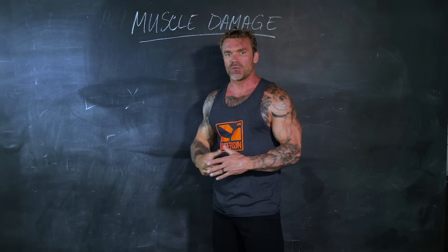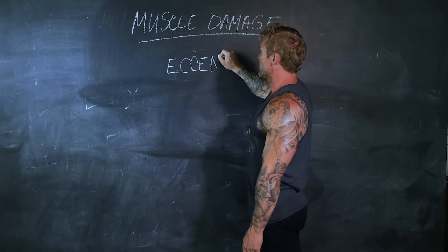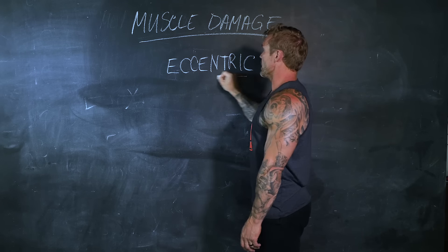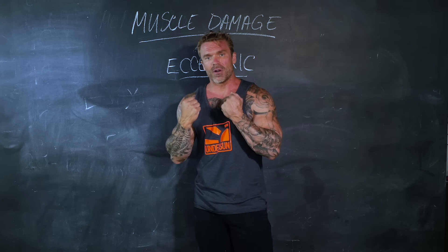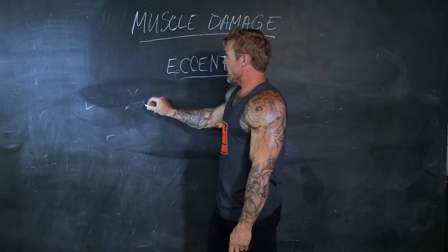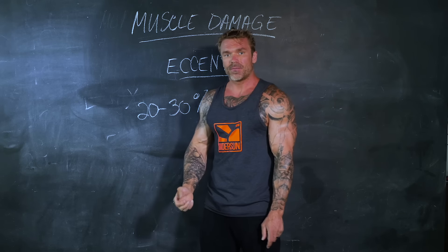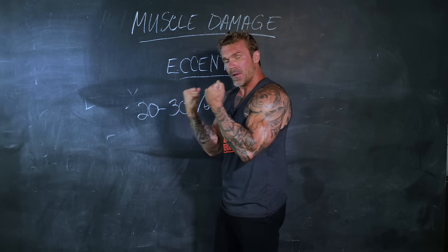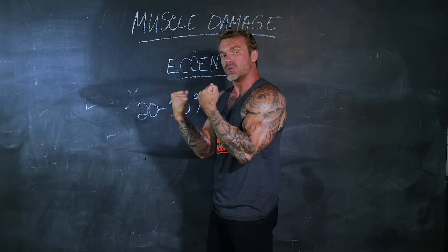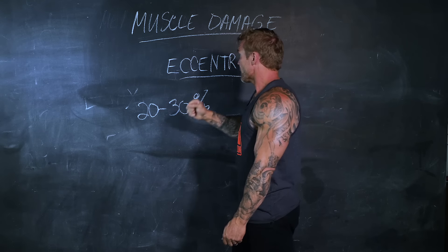So how do we stimulate muscle damage? The best tool we have is eccentric training — negatives. You see people with a spotter helping on the concentric phase so they can focus on the eccentric. Why is this so beneficial? We are 20 to 30 percent stronger in an eccentric contraction than a concentric one, meaning we can control heavier loads on the way down even if we can't lift them concentrically — and more load equals greater potential muscle damage.